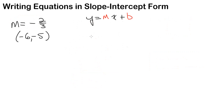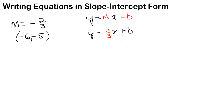Let's take a look at another example. This time the slope is negative 2 thirds, and a point on the line is negative 6 comma negative 5. So again, we need to plug in the slope and the y-intercept into the equation. We already have the slope, so that's going to look like y equals negative 2 thirds x plus b. Now we need to find our y-intercept b by substituting the x and y values from this point — and as always, use parentheses.